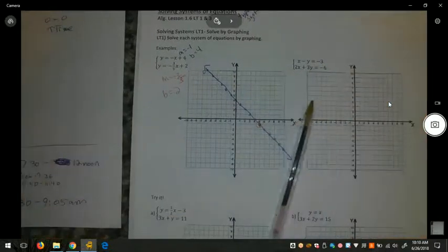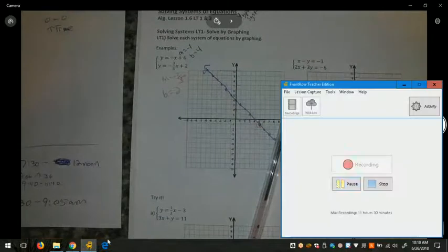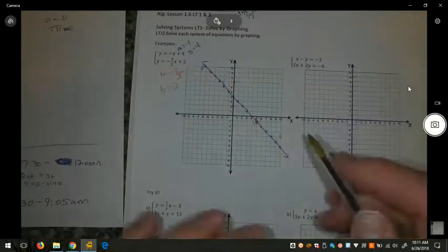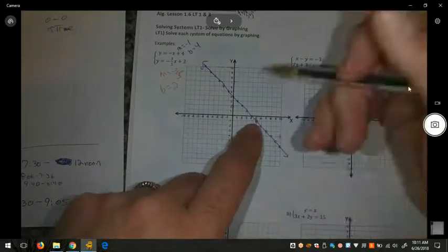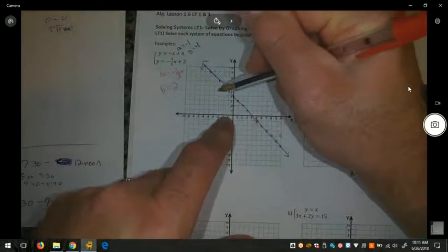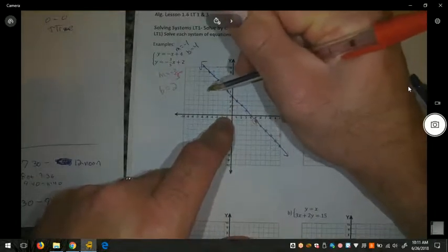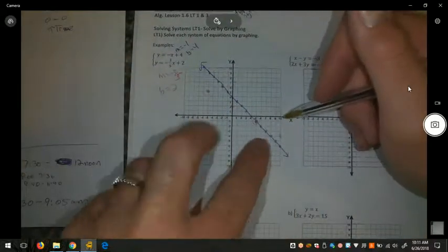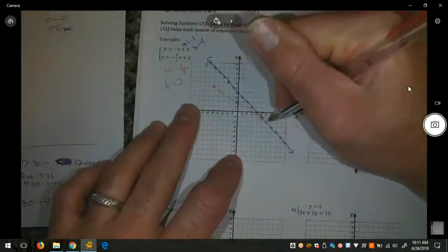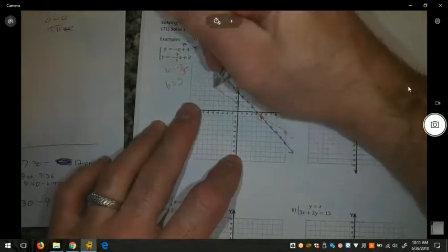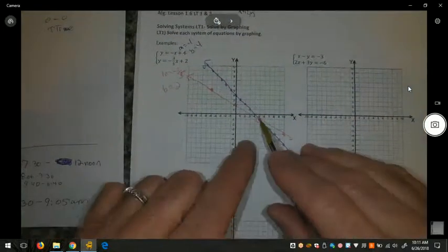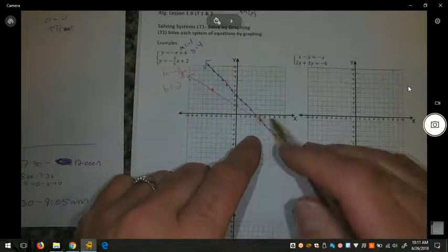Down 1, 2, 3 and over 1, 2, 3, 4, 5. Now, if I hadn't found my point of intersection here, then I would reverse this slope going up 1, 2, 3 and back 1, 2, 3, 4, 5. And I would repeat this process. But I have enough points. I have an accurate intersection point. So I'm just going to connect those points, usually with a ruler or a straight edge. And I have my equations graphed and I have the solution right here at 5, negative 1.